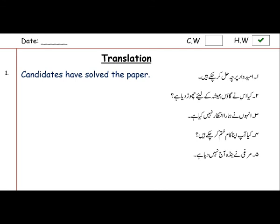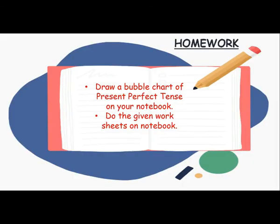Here we have used 'have' and the third form of the verb. For the second sentence there is a question, so you will put 'have' first, then the subject, then the verb. Do it by yourself — complete it at home. Here comes your homework: draw a bubble chart of present perfect tense on your notebook and do the given worksheets on your notebook. In the previous video I showed you the uses of present perfect tense in different conditions and made some bubbles — some balls — over there. So you have to prepare it on the notebook.